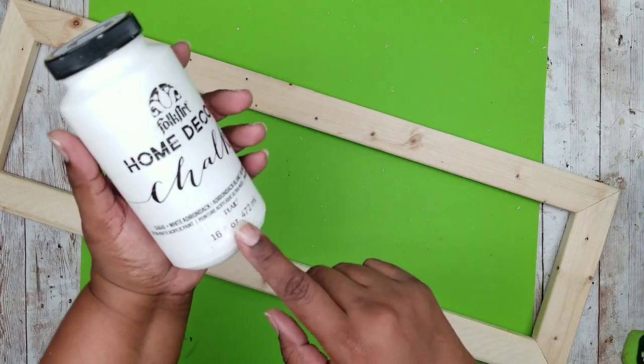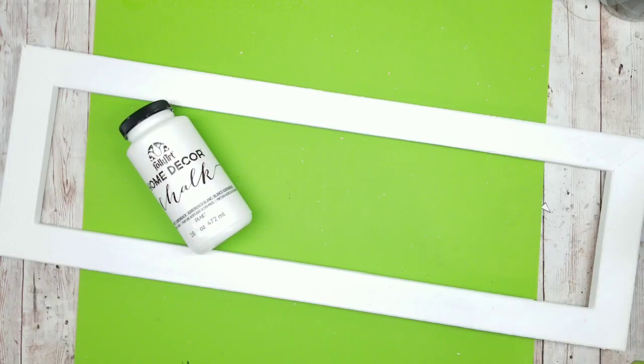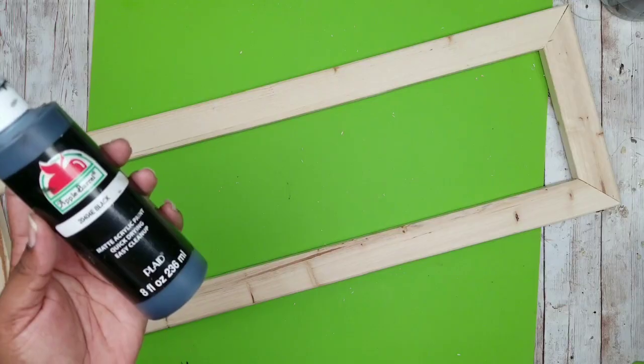I did make two additional frames because I wanted one in white and I painted it in white chalk paint and I painted another frame black and I used black acrylic paint.